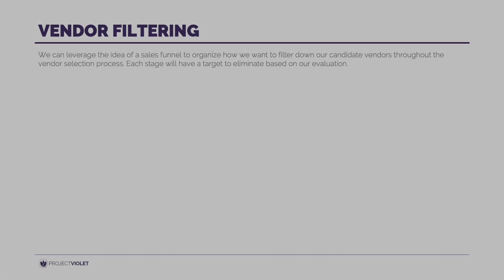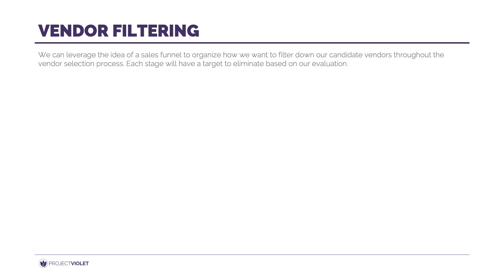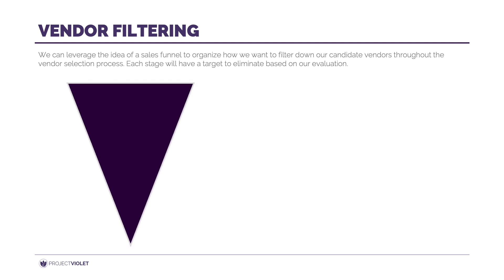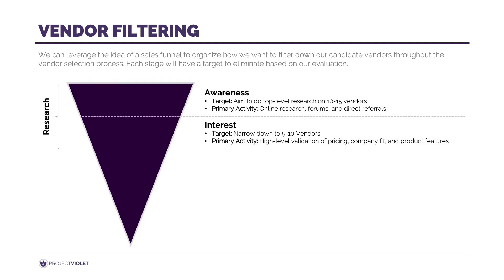With preparation done, we can move into how to conduct research on vendors and organize the information you find. One way to visualize the remaining phases is using the idea of a sales funnel. The research phase is entering the top of the funnel, gaining awareness of what's out there and narrowing down to vendors of interest. In the research phase, target 10 to 15 vendors for top-level research and then narrow down to about 5 to 10 vendors that will progress into the evaluation stage.